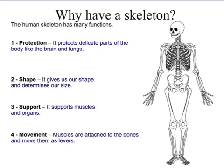Why do we have a skeleton? Many functions. The first is protection — our cranium protects our brain and delicate parts, and our ribs protect our thoracic region. It gives us our shape and determines our size. It also supports muscles and organs, and because muscles are attached to bones, it allows movement to take place. We'll be looking at that in our next lesson.